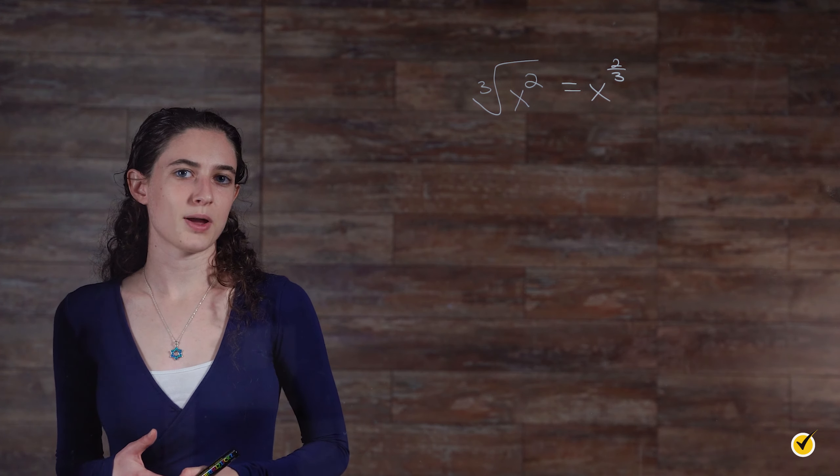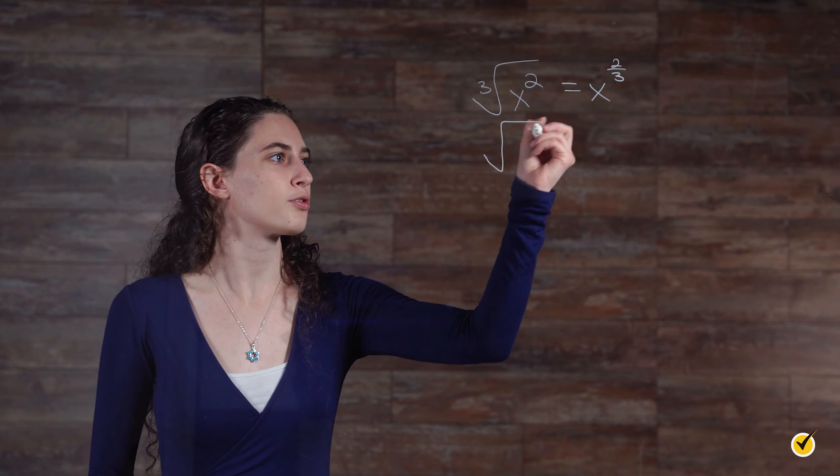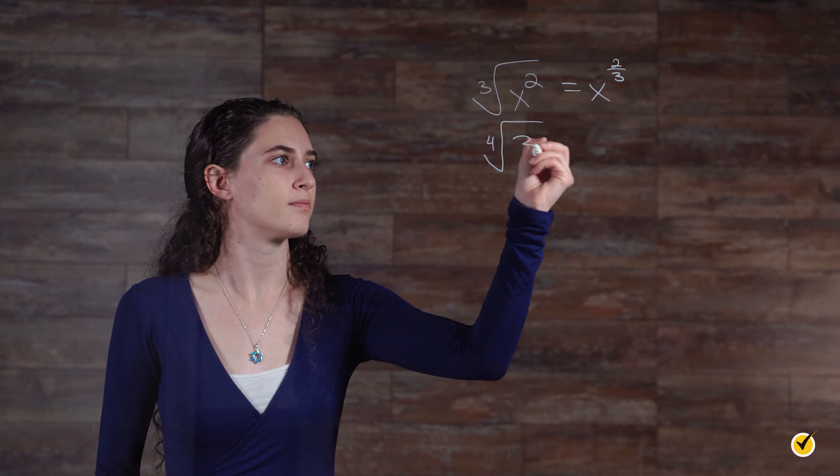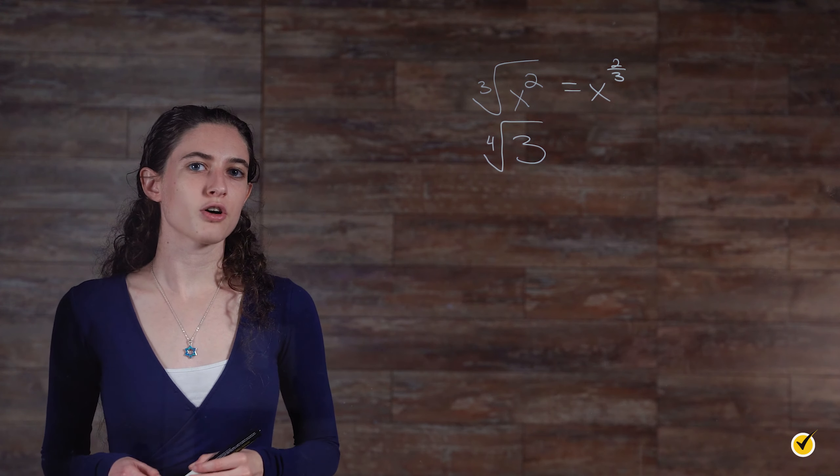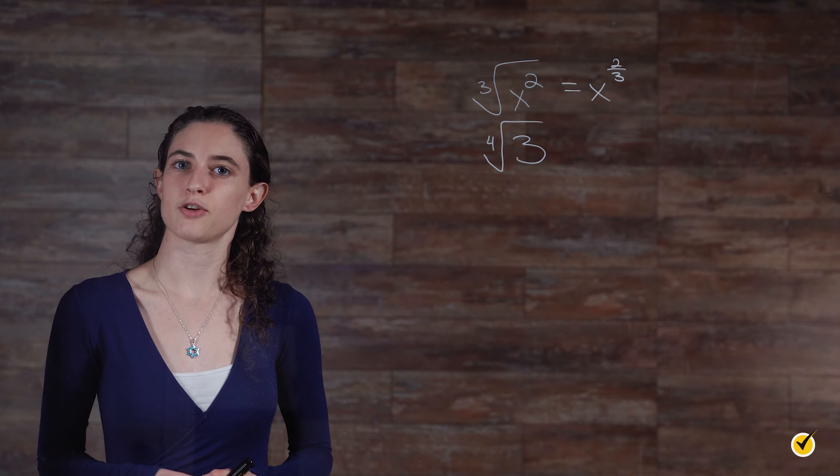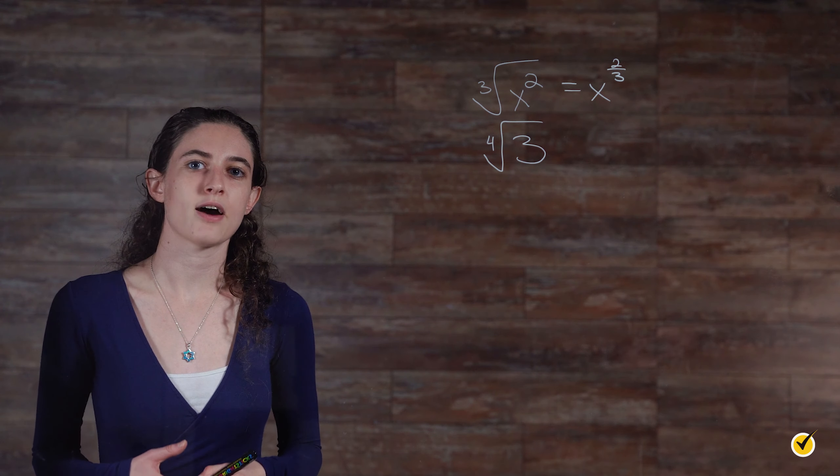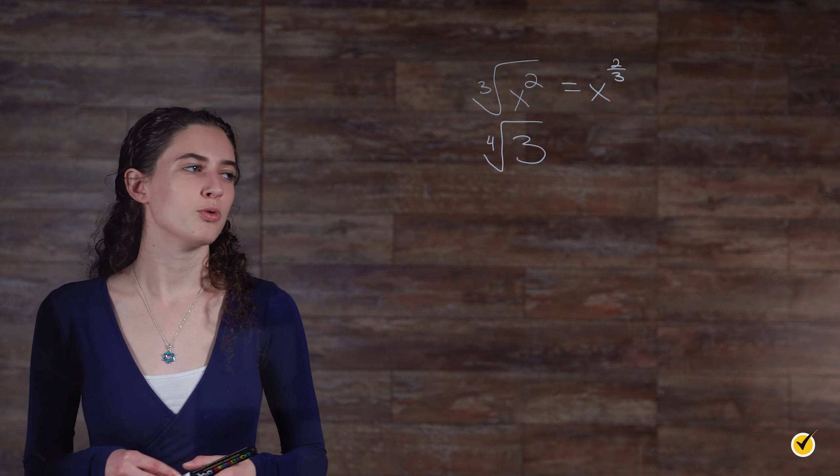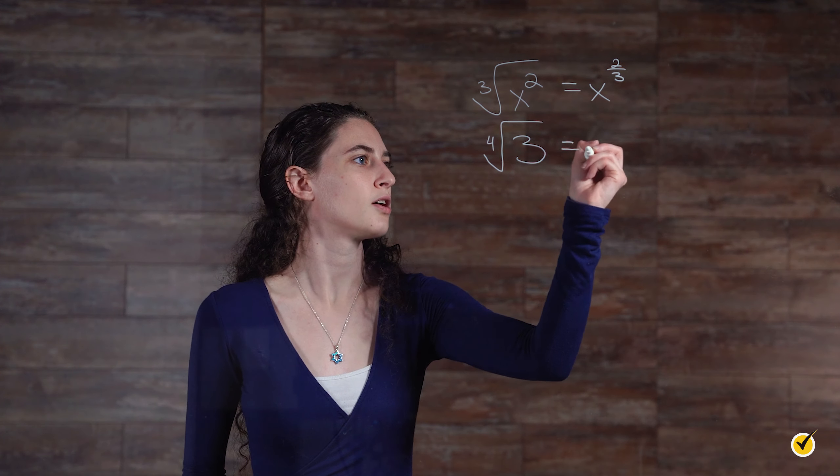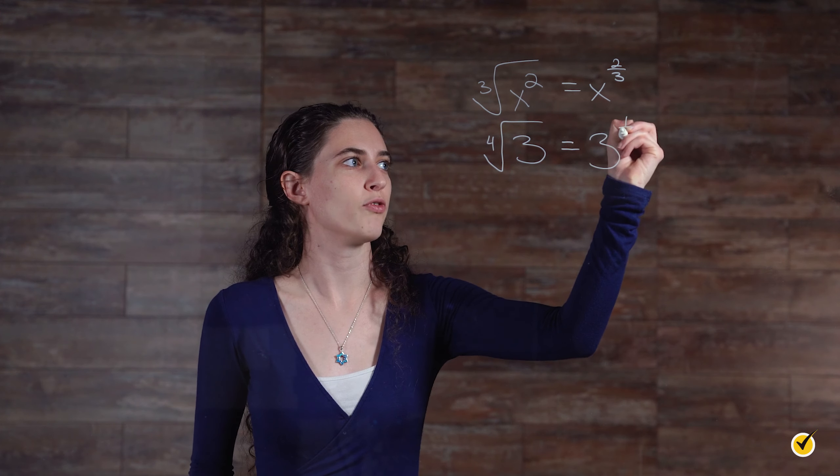Let's try another one. Let's look at the fourth root of 3. So we know that our index 4 becomes the denominator, but the radicand doesn't have an exponent. That means that 1 will become our numerator, which gives us 3 to the one-fourth power.